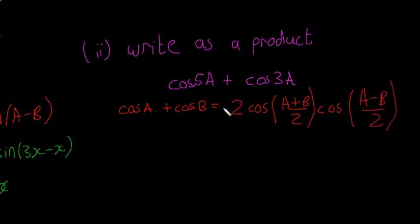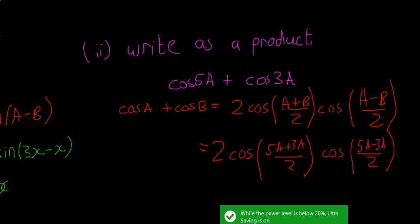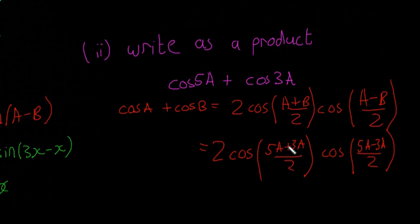So again, it's just getting it from the formula book and plugging these values in. So 2 cos 5a plus 3a divided by 2 by cos 5a minus 3a divided by 2. So I want enough space to write it all out. But this is going to be 5a plus 3a, that's going to be 8a. And if you divide 8 by 2, you're going to be left with 4a. And then this is going to be 5a minus 3a, which will be 2a divided by 2, we'll just be left with a.